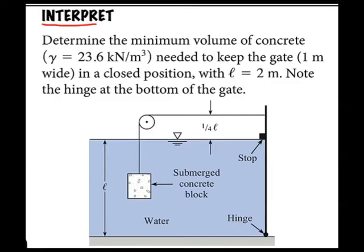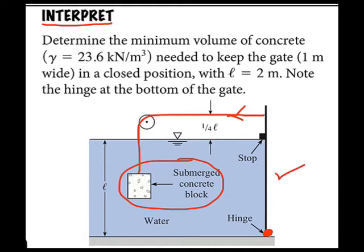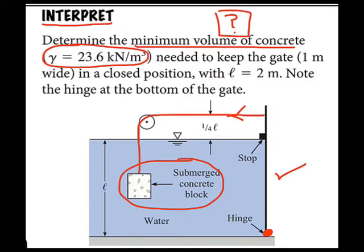I'll begin by interpreting the problem statement. I have this submerged concrete block connected up to this gate, pulling on the gate, and there's a hinge here. This block is holding the gate shut. The goal here is a minimum volume of concrete. The specific weight of concrete is given, and the gate dimensions 1 meter and 2 meters are given.